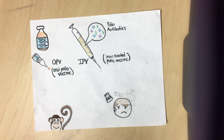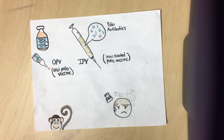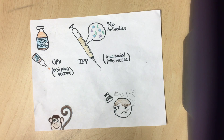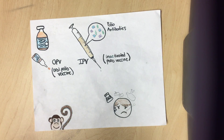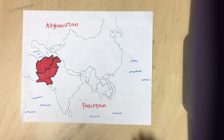There is no cure for the virus itself, but certain measures can be taken to subdue the effects and symptoms of polio. Antibiotics can be taken for urinary tract infections, while heating pads and warm towels help reduce muscle pain and spasms. Over-the-counter painkillers can also reduce headaches and muscle pains. For more advanced cases, physical therapy, braces or corrective shoes, or orthopedic surgery can help recover muscle strength and function.